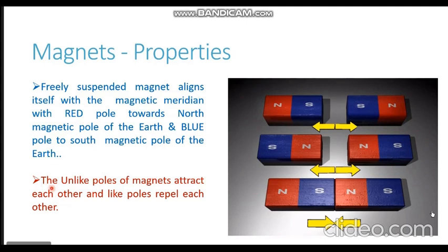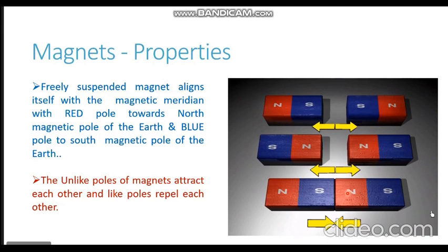The second property which magnets show is that unlike poles of magnets attract each other and like poles repel each other. If you bring blue pole close to blue pole there will be repulsion; red pole close to red pole there will also be repulsion. But if you bring the opposite poles together — red close to blue — there will be attraction between them. These are the two basic properties exhibited by magnets.